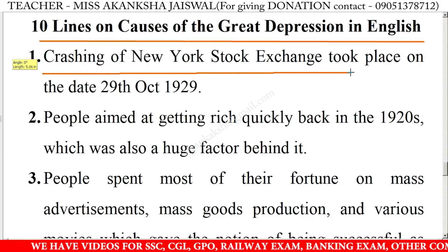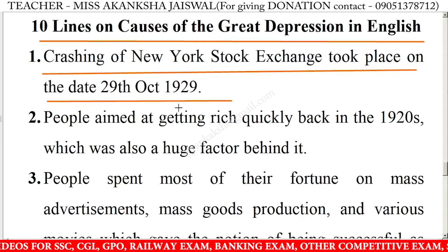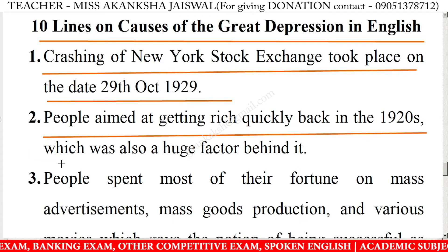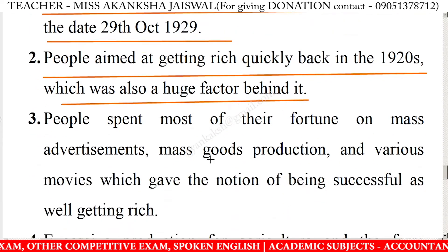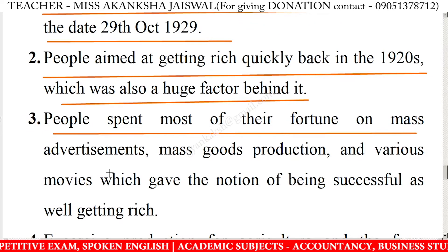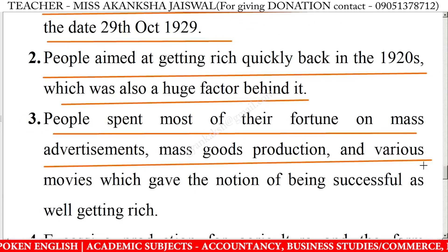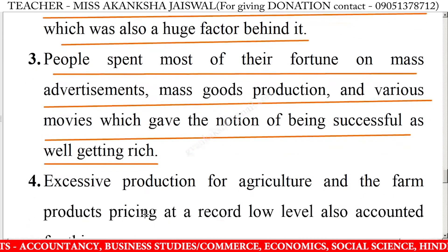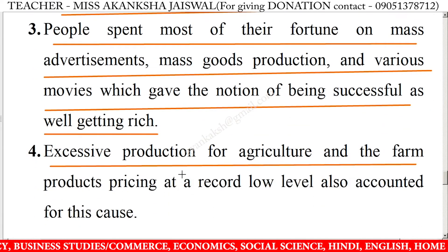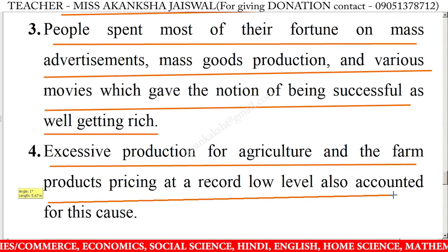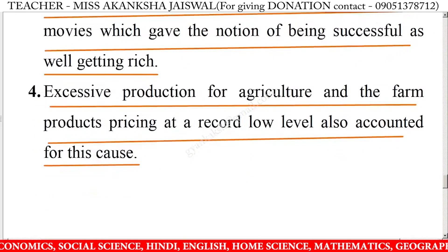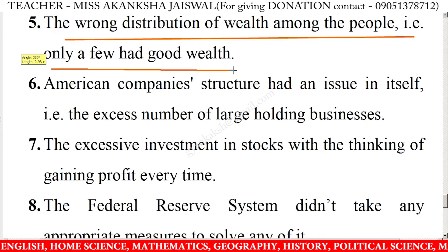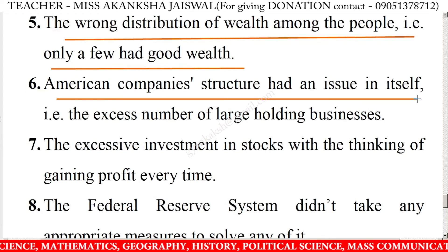Ten lines on causes of the great depression: The crashing of the New York Stock Exchange took place on October 29th, 1929. People aimed at getting rich quickly back in the 1920s, which was also a huge factor behind it. People spent most of their fortune on mass advertisements, mass goods production, and various movies, which gave the notion of being successful and getting rich. Excessive agricultural production and farm product prices at record lows also accounted for this cause.